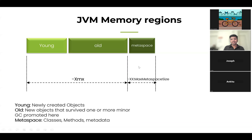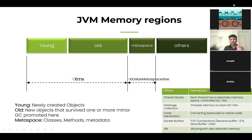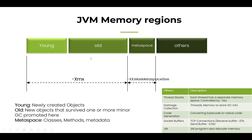These are the primary memory regions in the Java Virtual Machine. There is a young generation and old generation — young generation and old generation combined together is called the Java heap. As an application developer, when I write code and instantiate a new object, almost all of my application objects go into this heap — the young and the old generation. The metaspace is the region which stores the metadata definitions of your classes and methods, which is required to execute your program.